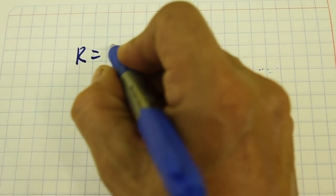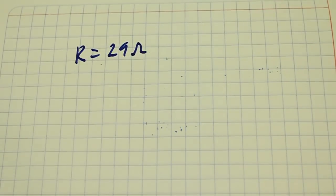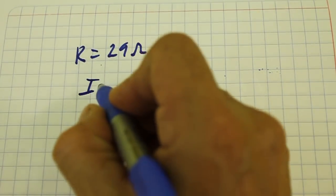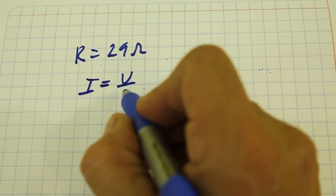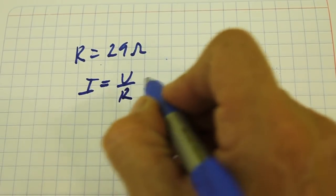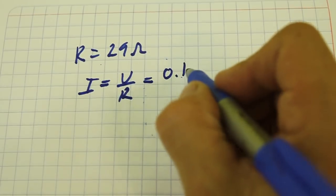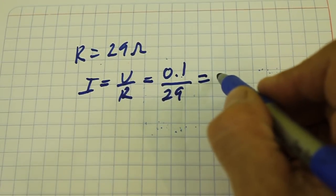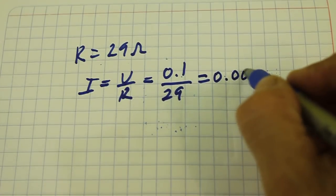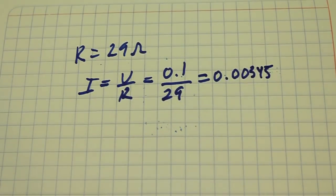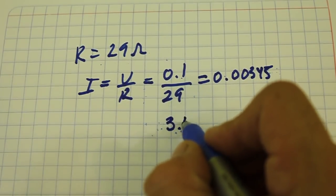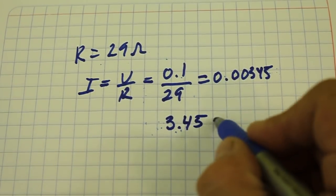The coil has a resistance of 29 ohms. Because of Ohm's law, the current will be voltage divided by resistance. That is 0.1 volts divided by 29, and this gives 0.00345 amps or a current of 3.45 milliamps.